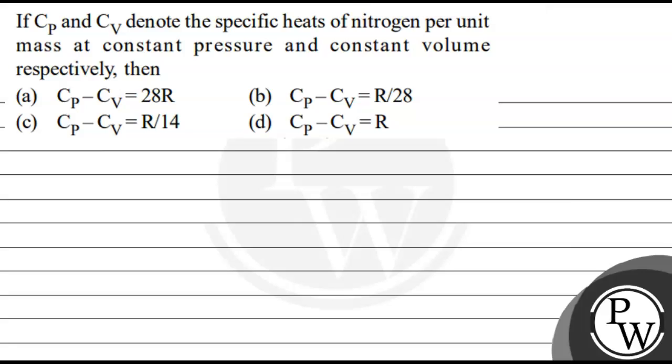Let's read the question. The question is: if Cp and Cv denote the specific heats of nitrogen per unit mass at constant pressure and constant volume respectively, then...